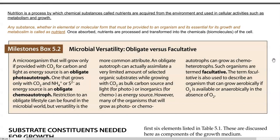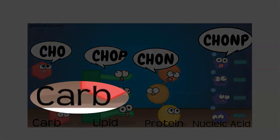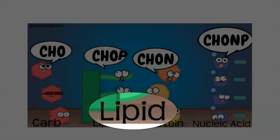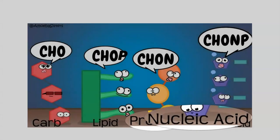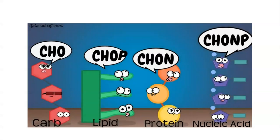Once a nutrient is absorbed, it is processed and transformed into chemical substances or biomolecules inside the cell. We have already seen the different biomolecules — carbohydrate, lipid, protein, and nucleic acid — all of which are made up of elements or various molecules that serve as nutrients in the living system.